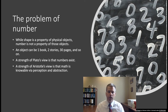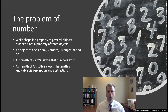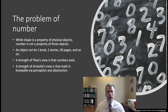A strength of the Platonic view is that numbers really do exist, but a strength of Aristotle's view is that math is knowable via perception and abstraction. The philosophy of mathematics is still an ongoing area — there are still debates between positions influenced by Plato and positions influenced by Aristotle. I hope this is a helpful introduction to philosophy of mathematics and to Aristotle's response to Plato and how he's thinking about mathematical truths.